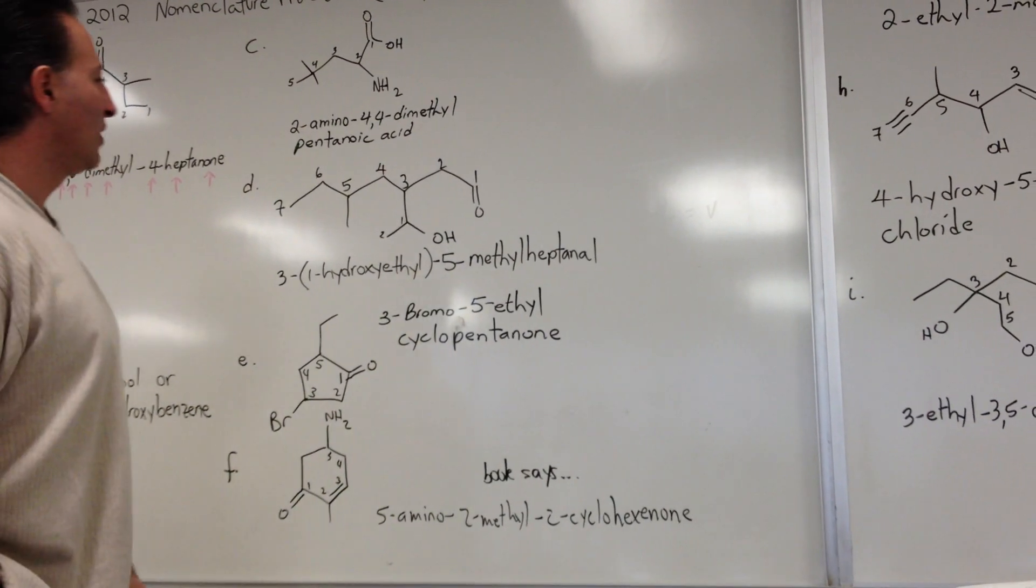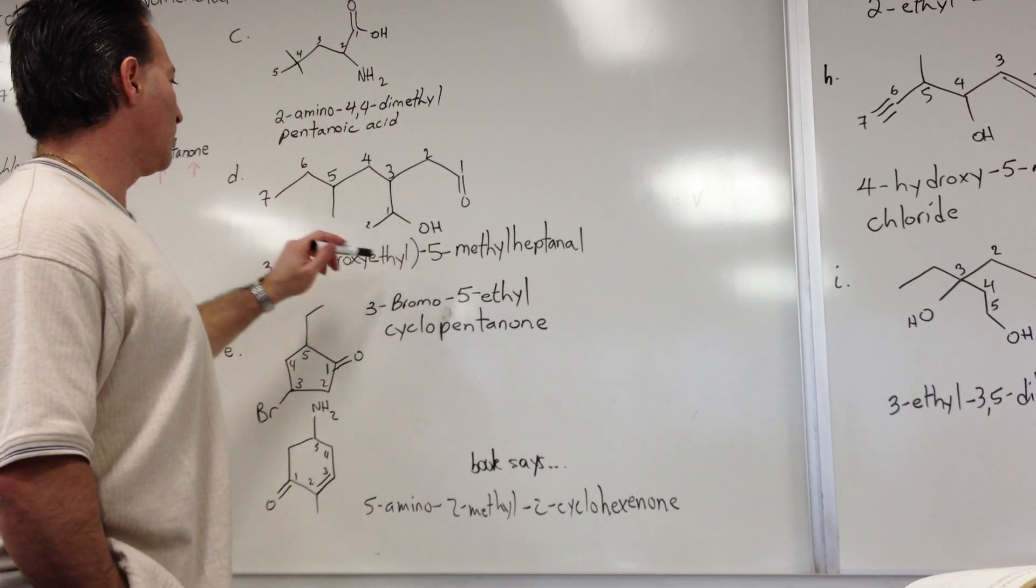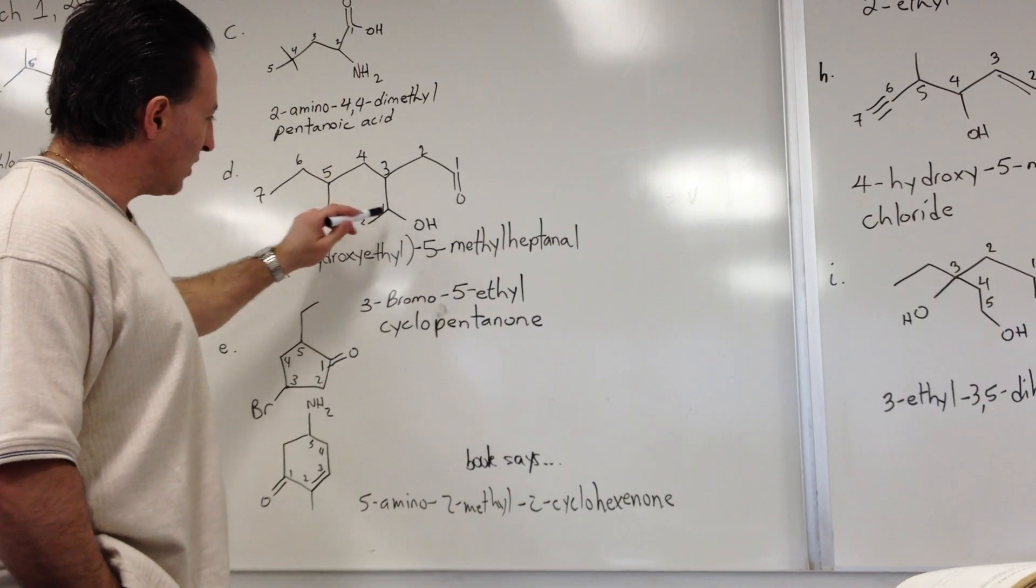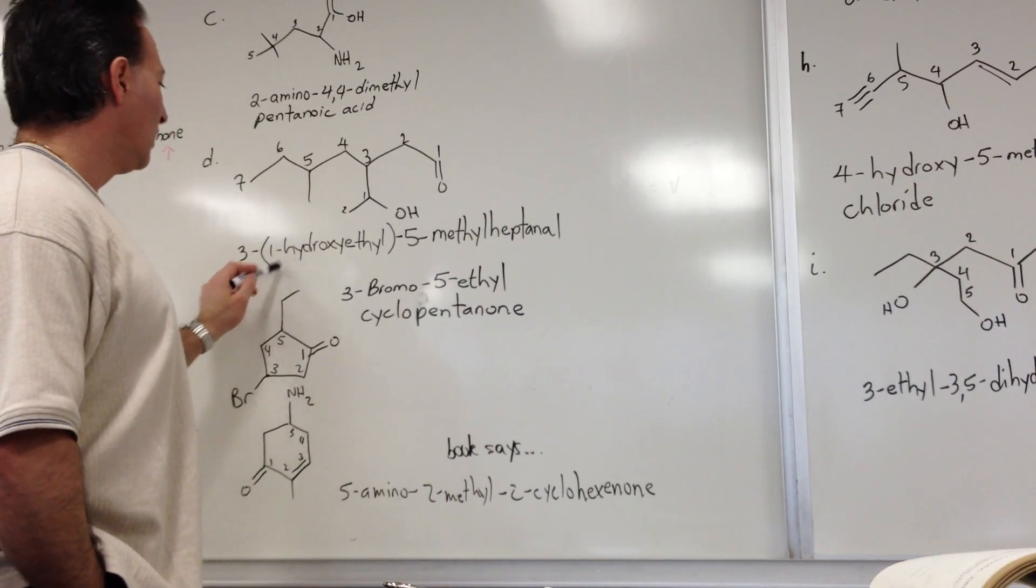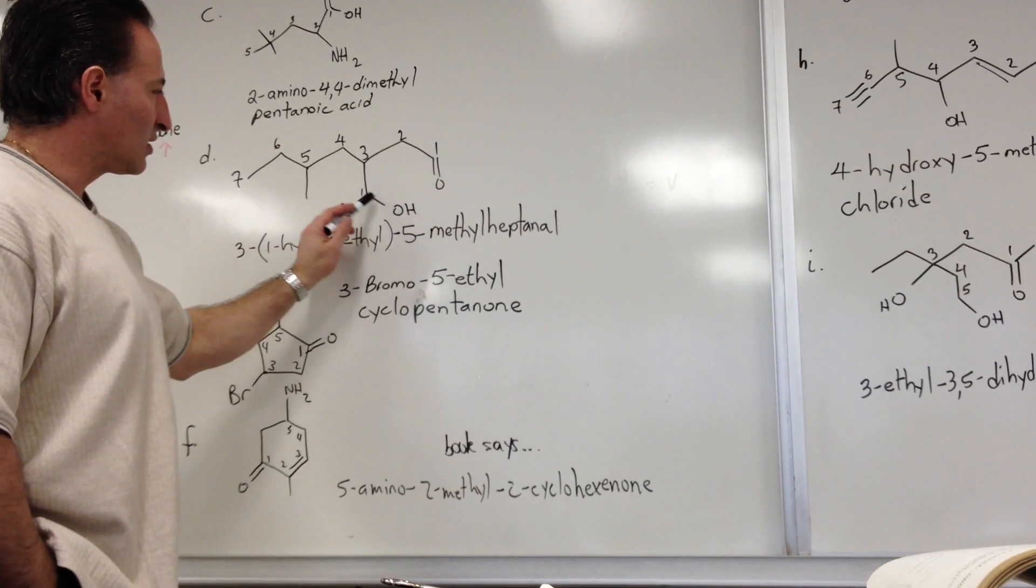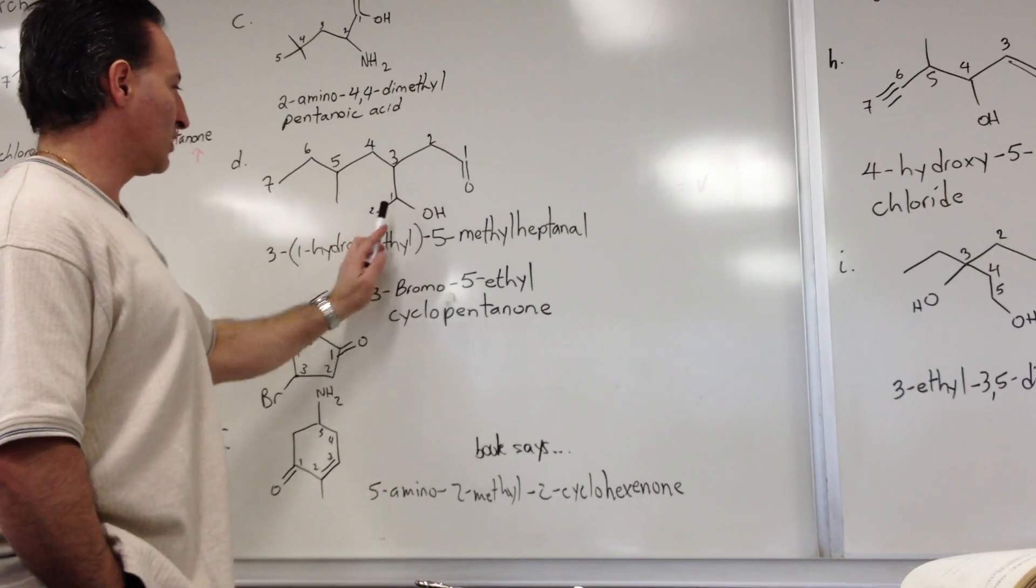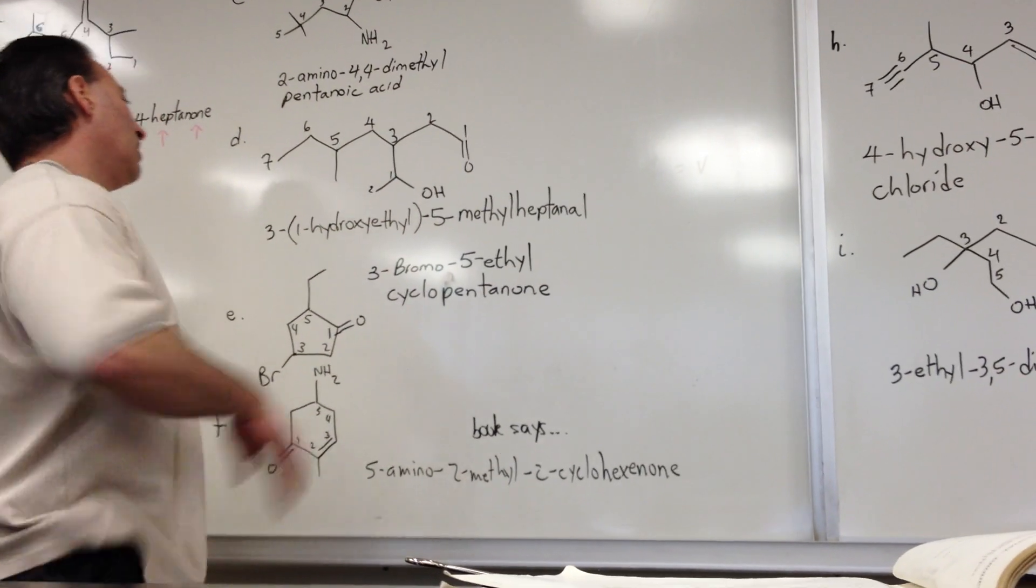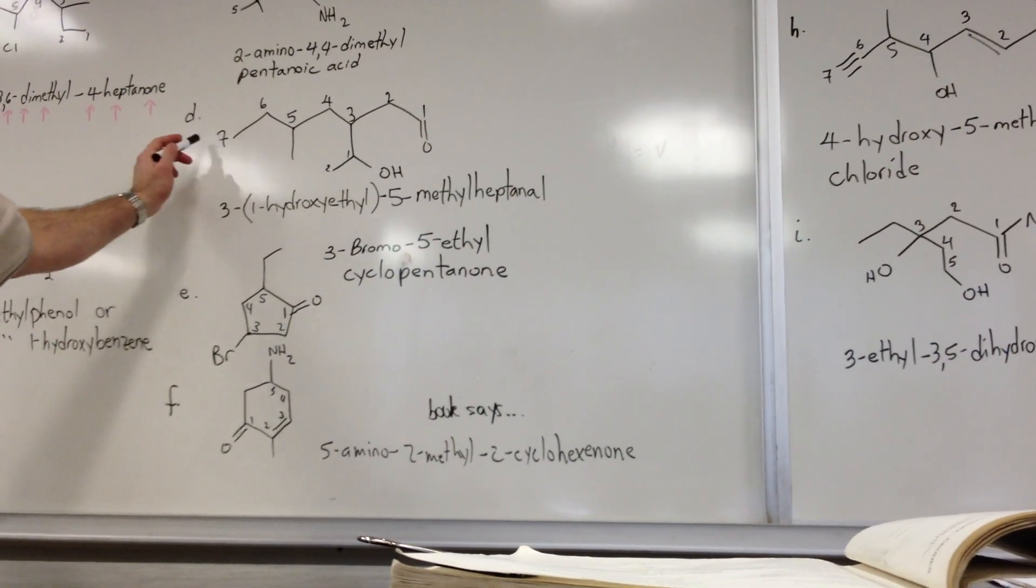In this one we have a heptanal, it's an aldehyde, with a methyl group and an ethyl group on it, and an ethyl group itself is substituted. So this one, we open a bracket, and we show that it's 1-hydroxy-substituted ethyl. So we say 3, say where that substituent is on the main chain, open bracket, 1-hydroxyethyl, 5-methyl-heptanal.